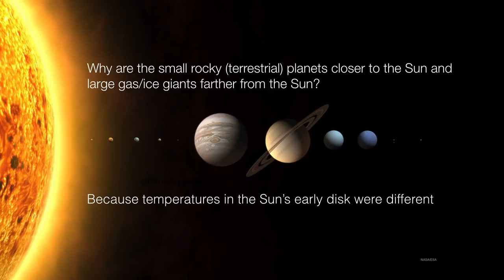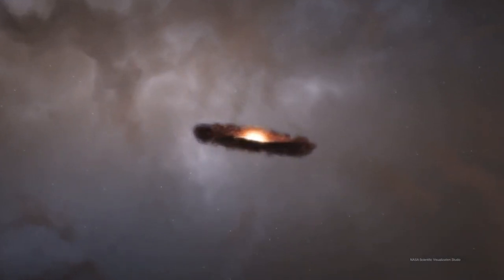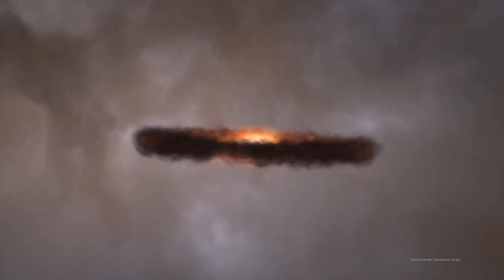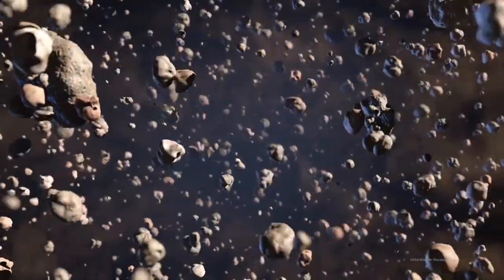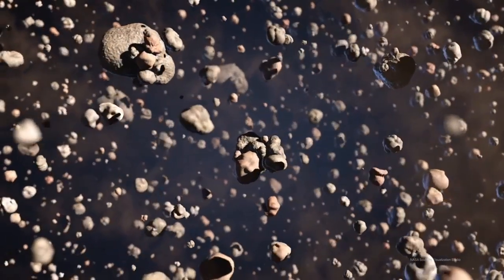So how does a spinning disk of gas and dust go on to become planets? Well, in order for us to think about that, we have to change our perspective. We have to go deep inside the circumstellar disk. And instead of thinking about the disk as a whole, we need to change our scale and get smaller and smaller until we are finally at the scale of individual grains of dust. So, these dust particles will go on to become planets. Here's how they do it.